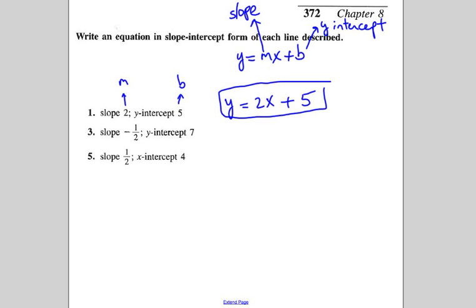Very similar for number 3. y equals, m is given to us, negative 1 half, and b is given to us as 7. So that's the answer for number 3.